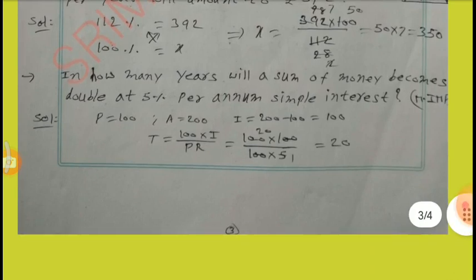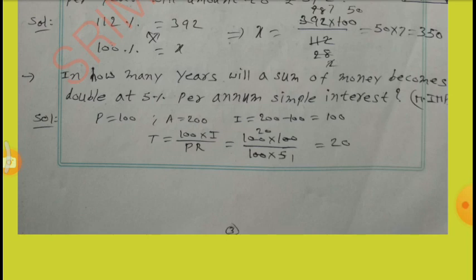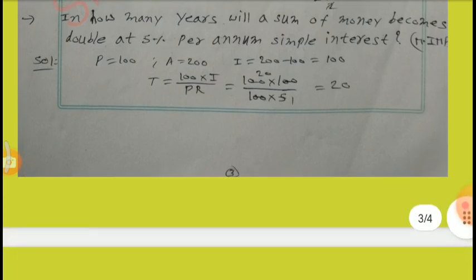In how many years will a sum of money become double at 5% per annum simple interest? Here, P equal to 100, A equal to 200. I equal to A minus P: 200 minus 100 equal to 100. Therefore, T equal to 100 into I by PR. By simplification, we get T equal to 20 years.